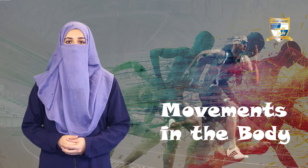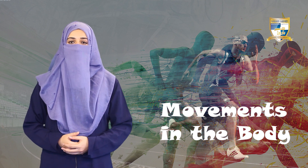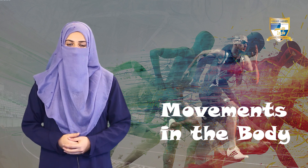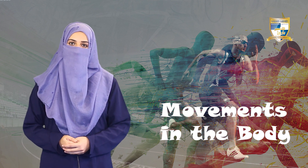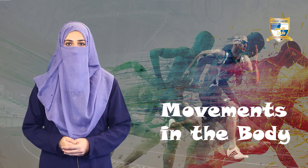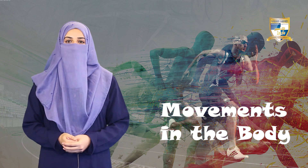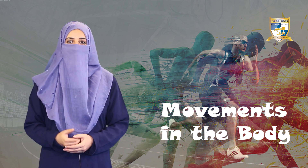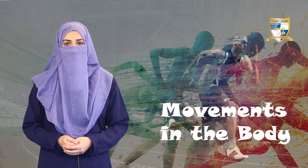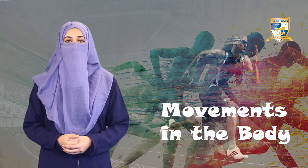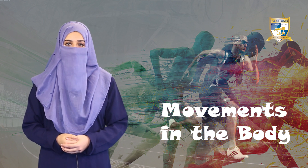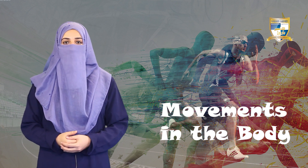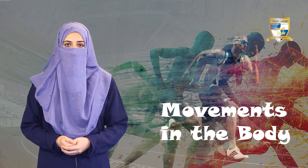One of the important things that helps in movement and locomotion is the joint. A joint is a place where two or more bones meet. Depending upon the type of joint, it can be movable, slightly movable, or immovable. The different types of joints include the hinge joint, pivot joint, ball and socket joint, and the gliding joint.